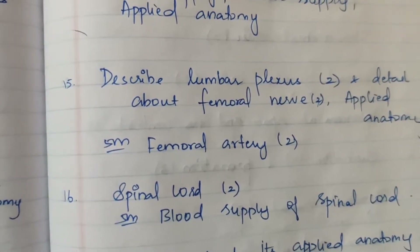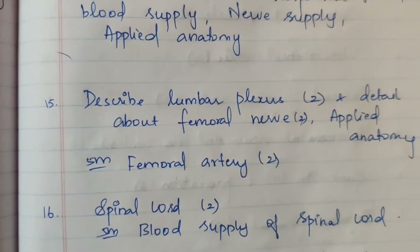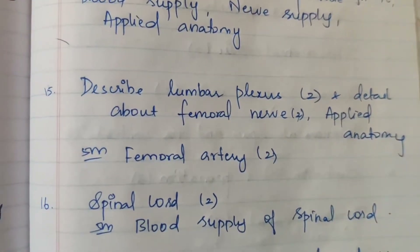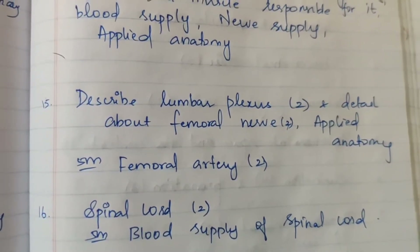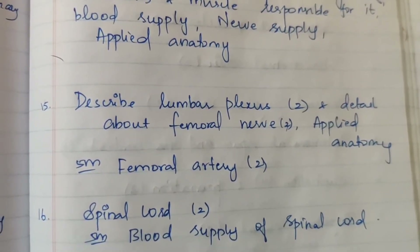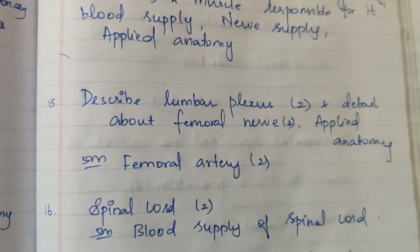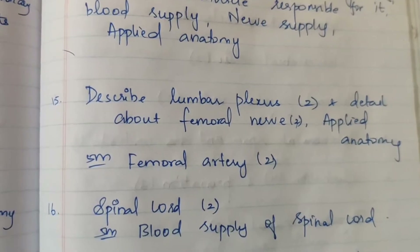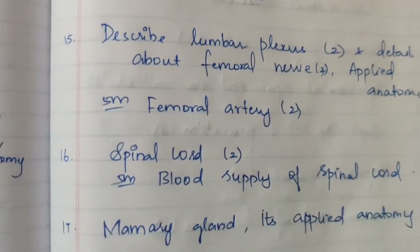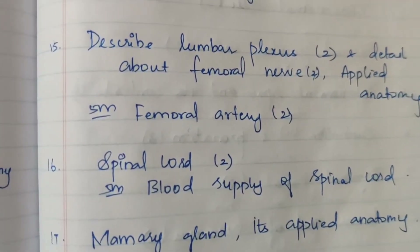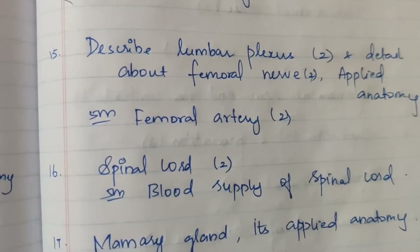Fifteenth question: lumbar plexus — asked 2 times for 15 marks. Details about femoral nerve asked 2 times, five marks asked 2 times, applied anatomy five marks asked 2 times. Femoral artery asked 2 times.